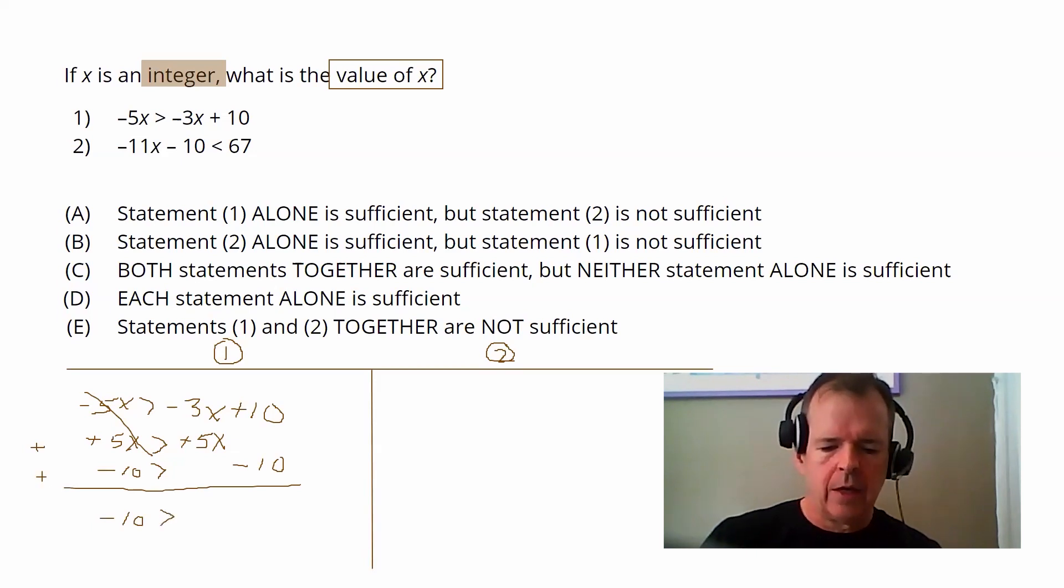leaving me with negative 10 on the left side. And that's greater than, these tens cancel. I have a positive 10 and a negative 10 and I've got negative three X plus five X. So that's two X at this point in time. I can divide both sides by two and I get negative five is greater than X.